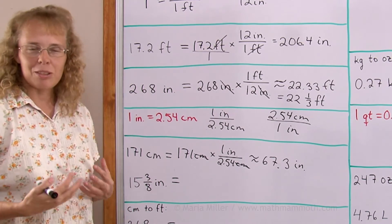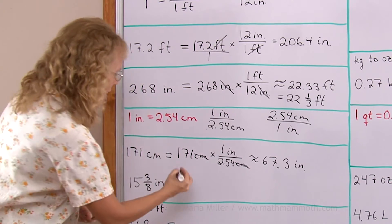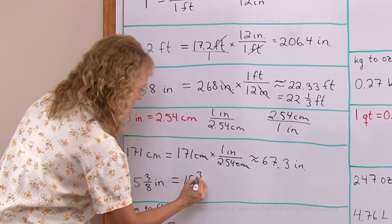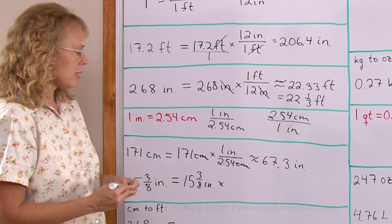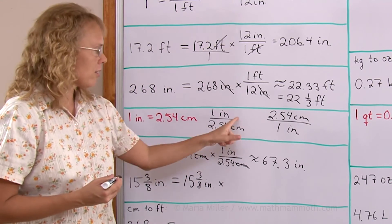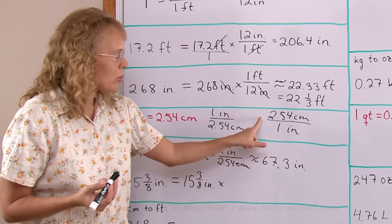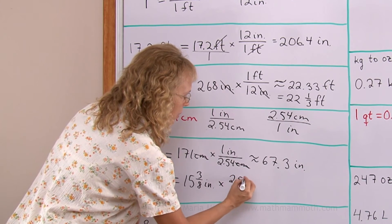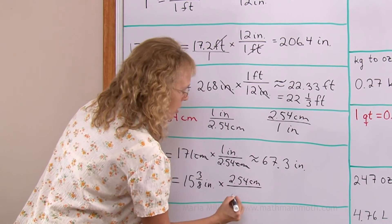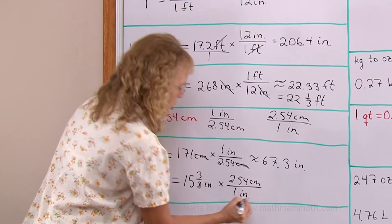Now this time I will choose this one, so the inches will be in the denominator so I can cancel them out soon. 2.54 centimeters over 1 inch.